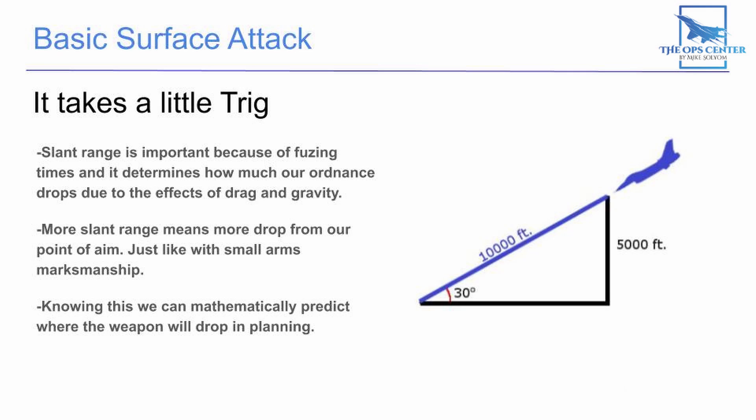Knowing the slant range is important for a number of reasons. Many bomb fuses need to travel a certain minimum distance before they arm. Another reason we'd want to know the slant range is that if we know how far our ordnance is going to travel, we can look up the correct point of aim in a chart. You can also use these numbers to help with your planning — if a certain landmark near your target will give you 20,000 feet of slant range, you know you need to be 10,000 feet over that landmark before you do your roll-in at a 30-degree dive angle.